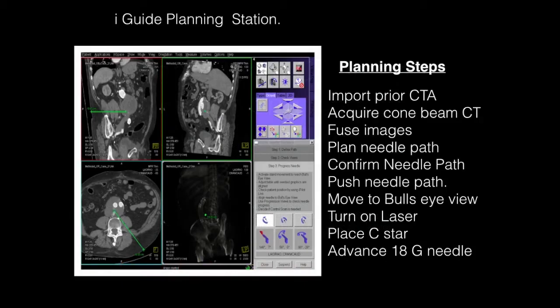This shows the interface in the iGUIDE planning station used to develop a needle guidance path, shown in green in the lower left panel. The planning steps include importing a previously obtained CTA, acquisition of cone beam CT in the hybrid room, fusion of these two images together. On the workstation we then plan the needle path, confirm that needle path, and then push it onto the live fluoro system in which we're going to perform the procedure.